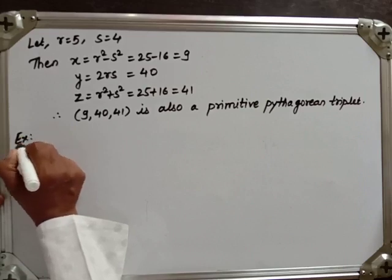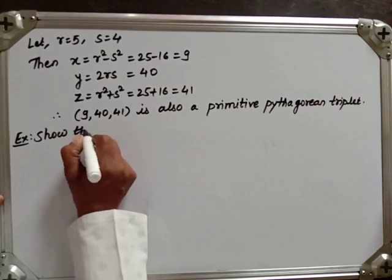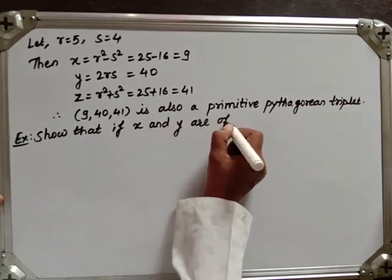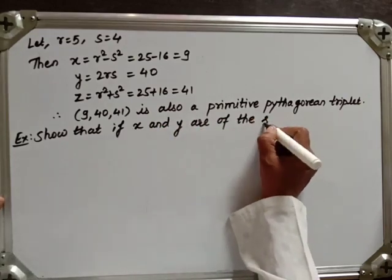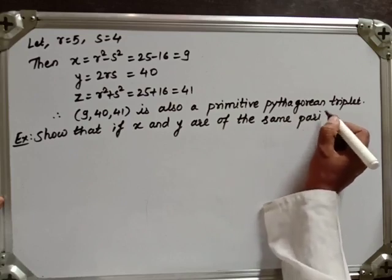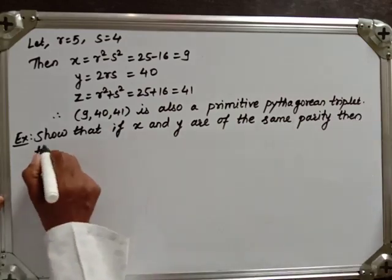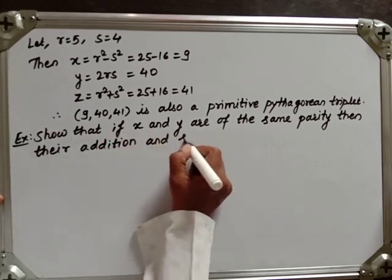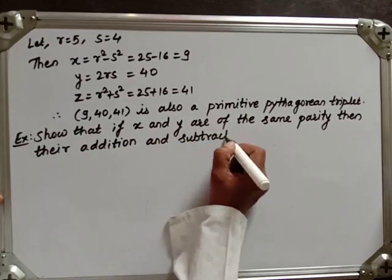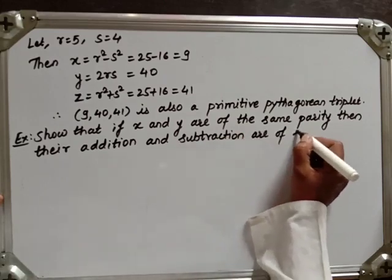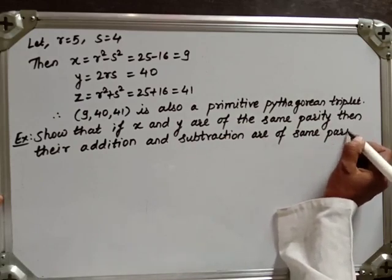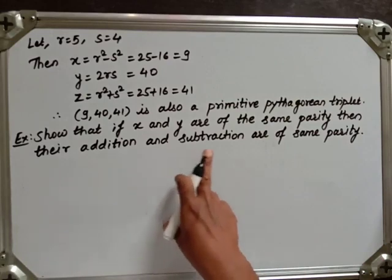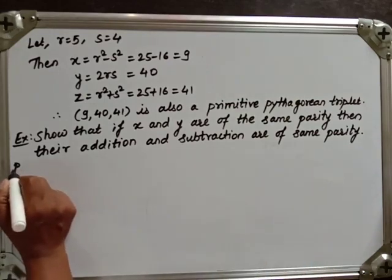Now let's see one example. Show that if x and y are of the same parity, then their addition and subtraction are also of the same parity. So x and y are of the same parity, and we have to prove their addition and subtraction are also of the same parity.